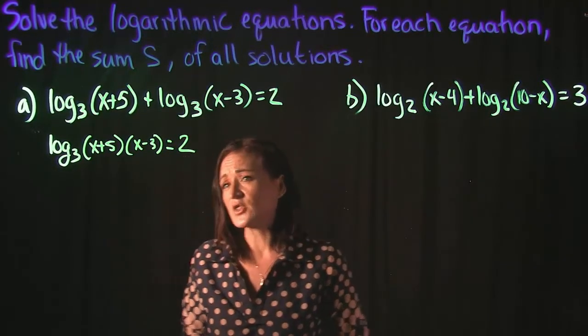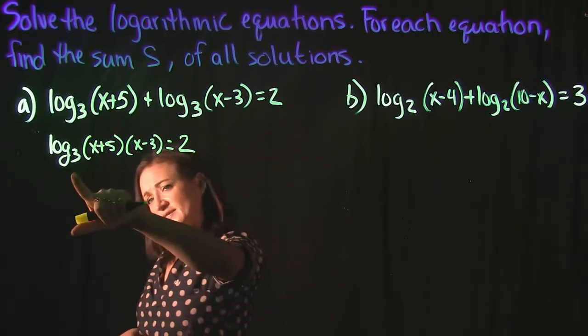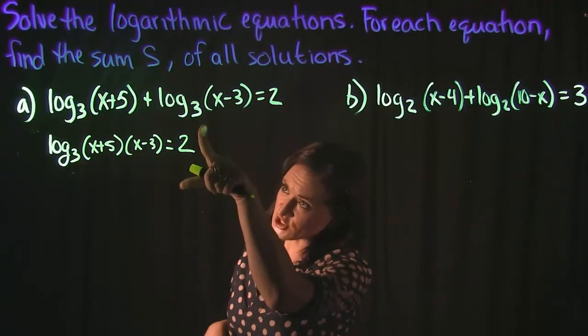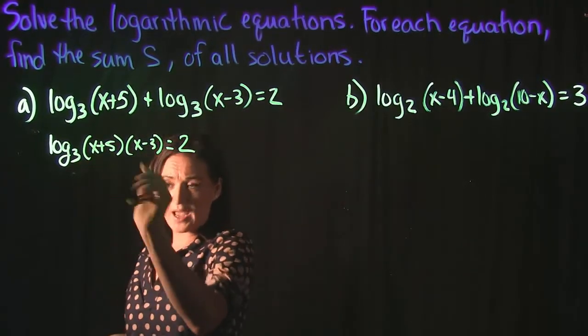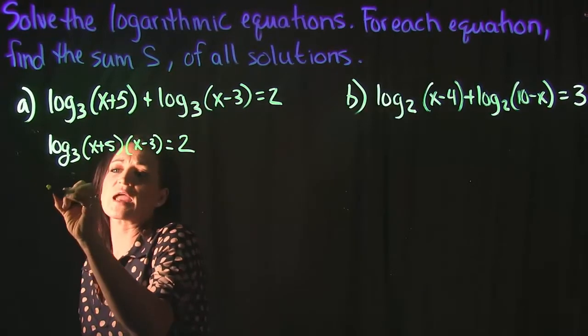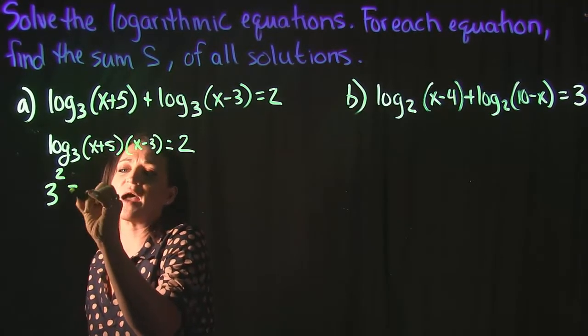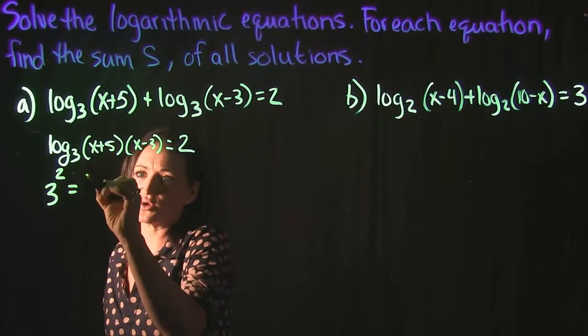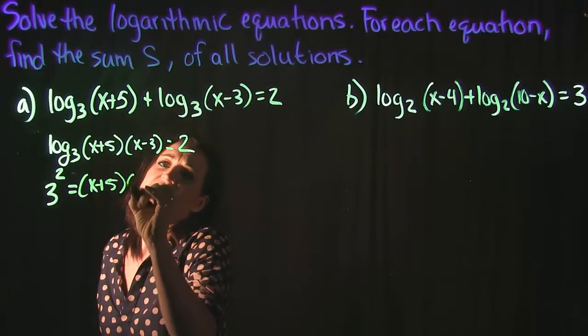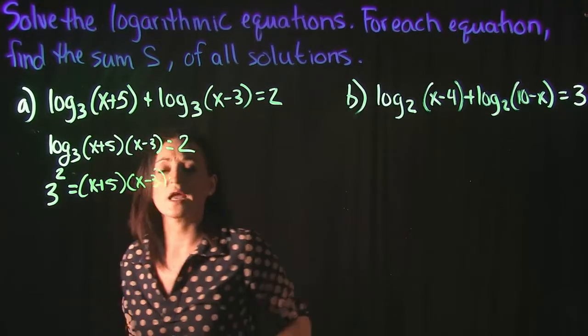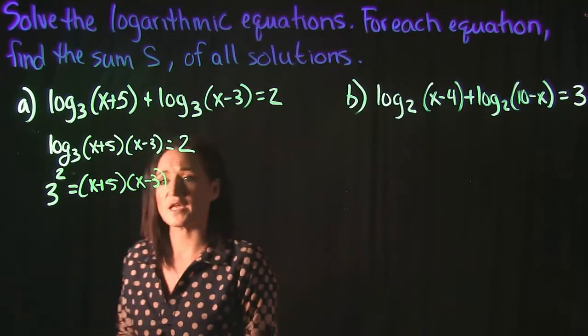I'm then going to use another rule for logs that says we can take our base, raise it to this power here, set it equal to what we have here. So that would look like 3 raised to the second power is equal to x plus 5 times x minus 3, and this is the equation that we want to work on solving.